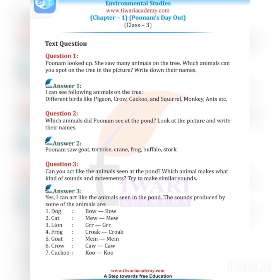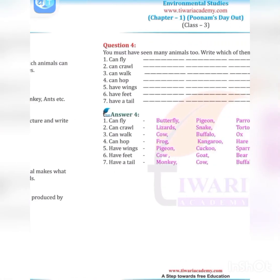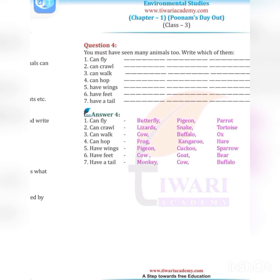Question three: Can you act like the animals seen at the pond? Which animal makes what kind of sounds? The sounds produced by some animals are: dog — bow wow, cat — meow meow, lion — gurgle, frog — croak croak, goat — meh meh, crow — kaw kaw, cuckoo — koo koo.